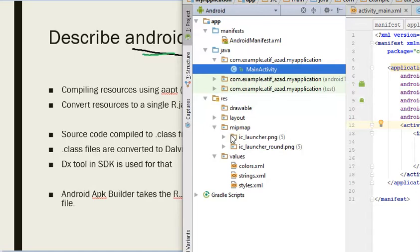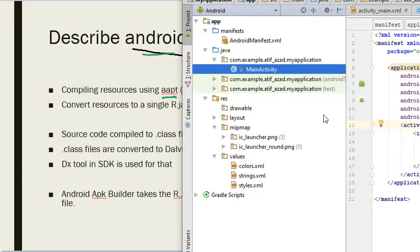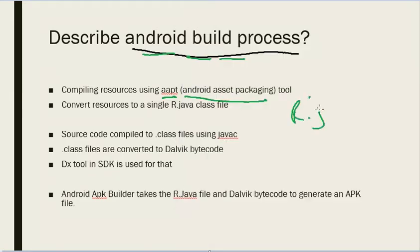How these Java files and resources are all built into the final APK bundle is a two-step process. First, you have the Android Asset Packaging Tool, which is called AAPT. This converts all of your resource files into one R.java class file.